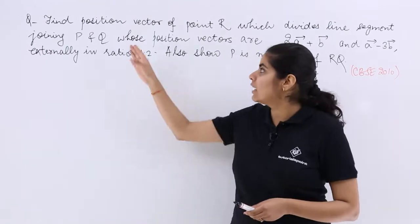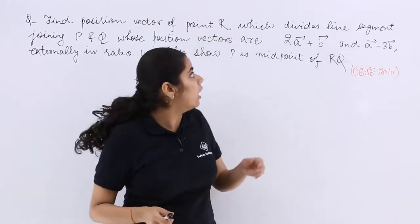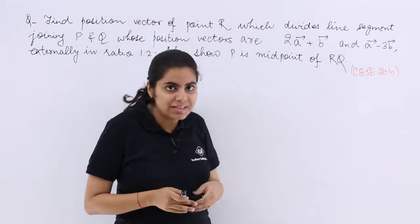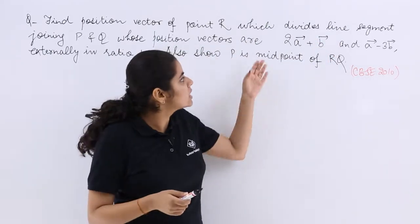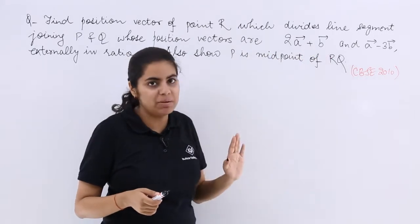Let's see this question. It says find the position vector of the point R which divides the line segment joining P and Q whose position vectors are 2A plus B and A minus 3B.